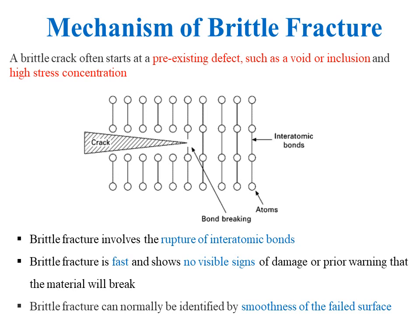Brittle fracture occurs in two stages: first, initiation of a crack, and second, rapid propagation of the crack, leading to complete fracture in a catastrophic manner. A brittle crack often starts at a pre-existing defect such as a void or inclusion, or it can initiate in a defect-free material at a region of high stress concentration, such as at the edge of a drilled hole or notch. Brittle fracture is also called fast fracture.